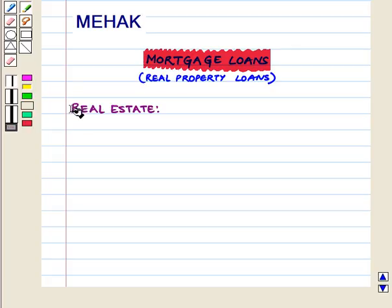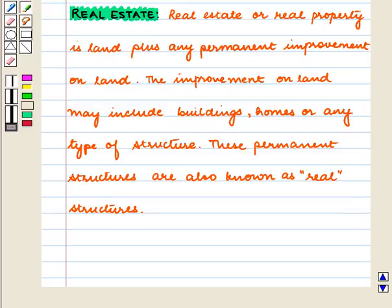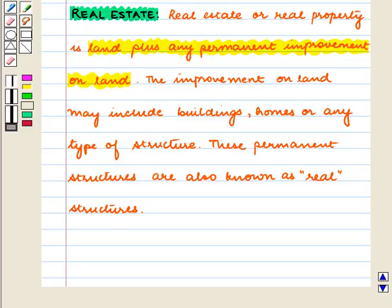Let us first understand the meaning of real estate or real property. Real estate or real property is land plus any permanent improvement on land. The improvement on land may include buildings, homes, or any type of structure. These permanent structures are also known as real structures.